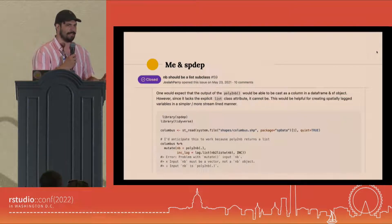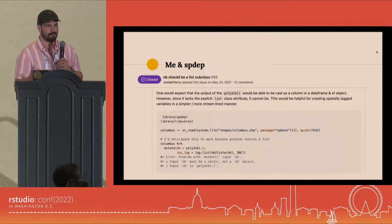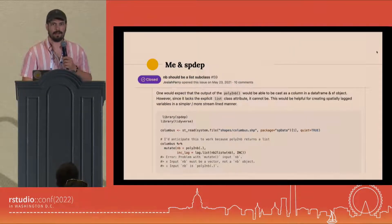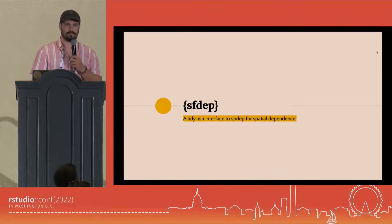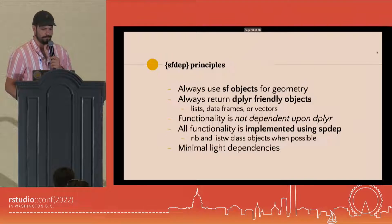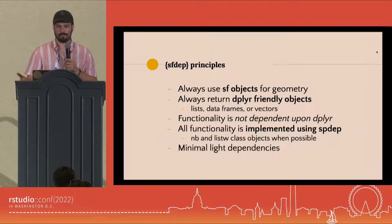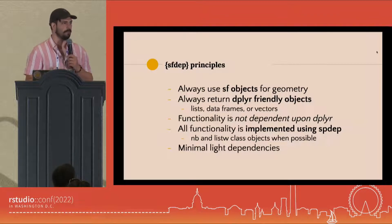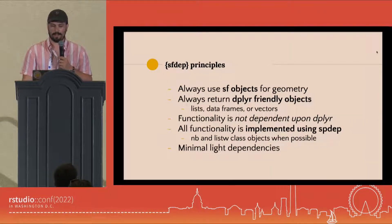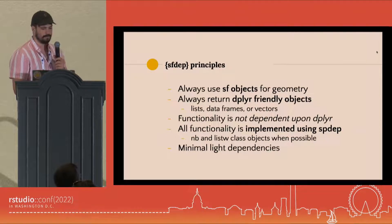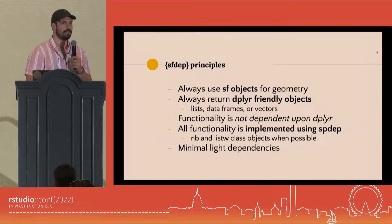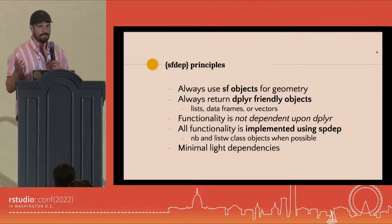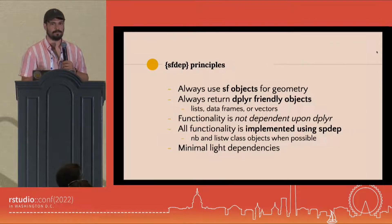When I couldn't make a neighbor list in a mutate function call, I created an issue, but unfortunately that issue went nowhere. So my response was to create a tidy interface called sfdep. sfdep is an interface and extension to spdep for spatial dependence. Its principles are: always use sf objects for geometry, always return dplyr-friendly objects — lists, data frames, vectors — and functionality shouldn't be dependent upon dplyr for those who don't want it. All additional functionality is implemented using spdep objects for backwards compatibility.